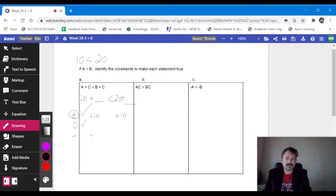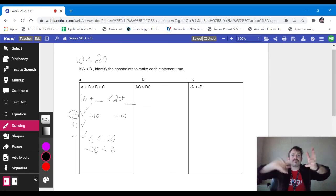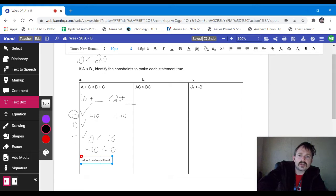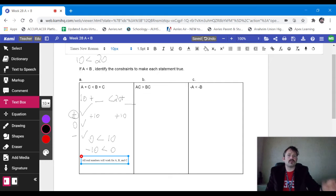Now this last one, if I plugged in negative 10, so if I do 10 plus negative 10 is zero, then I want to know 20 plus negative 10 is 10. Well, that's true. Let's try negative 20 then. 10 plus negative 20 is negative 10, is less than 20 plus negative 20 is zero. That's still true. So in these cases, as long as we make sure any value for A and B, that it proves the first statement is true, then we can state that all values, all real numbers will work for A, B, and C. So any number will work for A, B, and C.